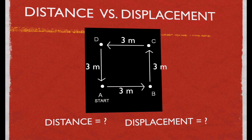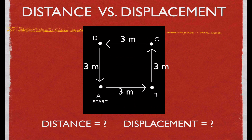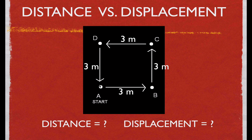Now we can go back to the original question from the beginning of the video. We start at A, go to B, go to C, go to D, and then back to A. The distance is just how far we went: 3, 6, 9, 12 — so the distance is 12 meters. But what is our displacement? Displacement is your change in position. We started here and went right back to the same place, so our displacement is 0 meters. We started and ended at the same place — we were not displaced.